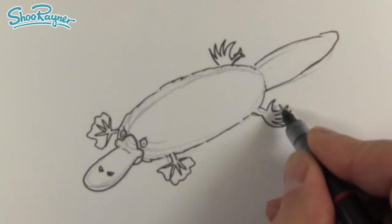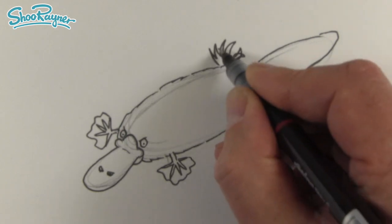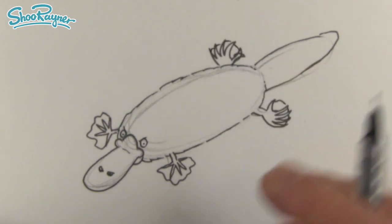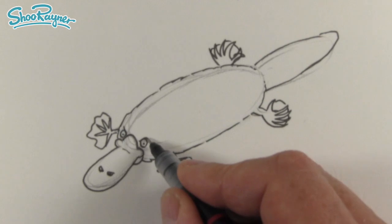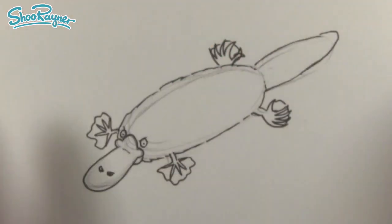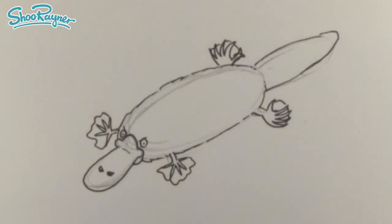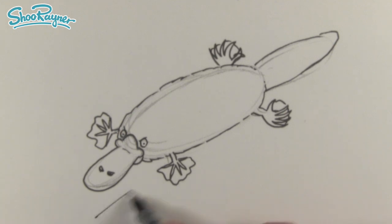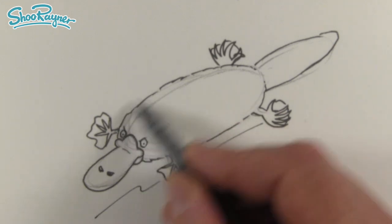These need to be connected up as well with a kind of leathery swimming, duckbill feet, web, duck web feet, that's the word I'm looking for. Then we can have some kind of watery stuff going on there.